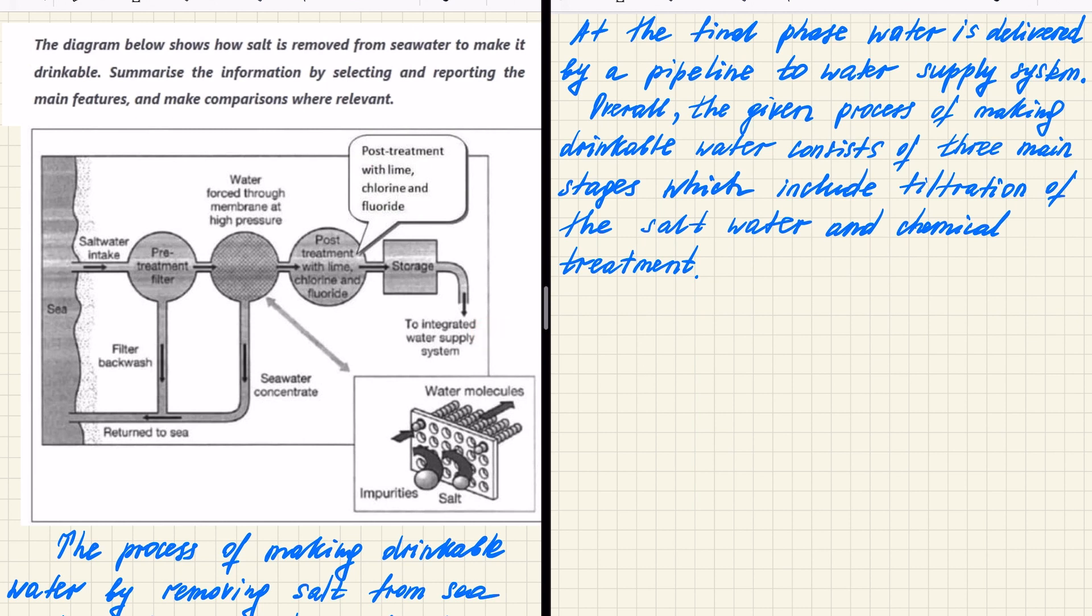And we go to the conclusion part. And as I told you, as sum up, or you can say overall, to sum up all of these additional words in order to show that this is conclusion. Overall, the given process of making drinkable water consists of three main stages, which include filtration of the salt water and the chemical treatment. So by filtration, we put both of them, pre-treatment and this water force membrane process. And the final one is adding of the chemicals. And we just concluded with this by means of summarizing of this diagram.